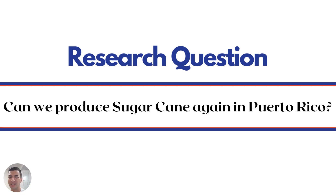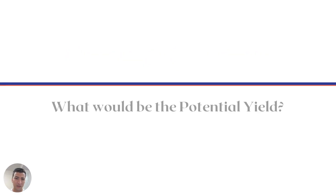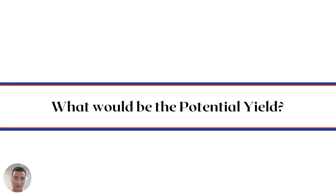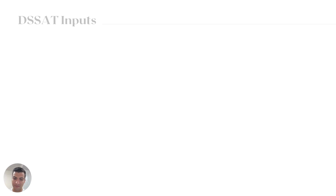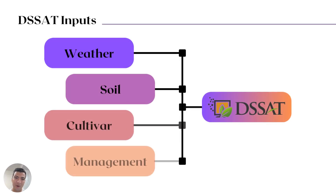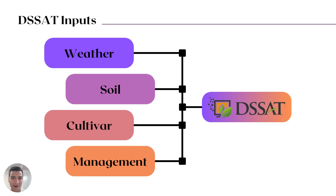Well, maybe we don't need to. But first we need to know what will be the potential yield — a good estimation to aim for. That's why we're going to use DSSAT, and that's what my research is on, because this program focuses on two things: digitalization and circular economy.